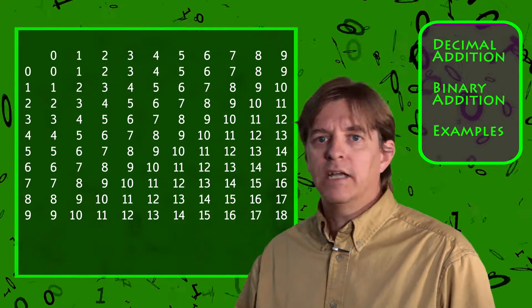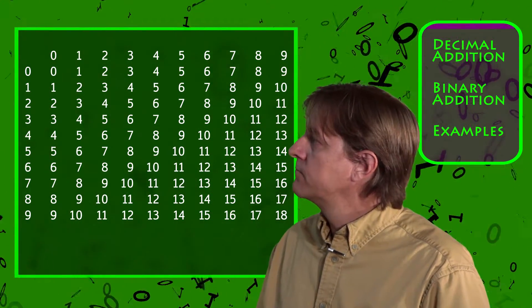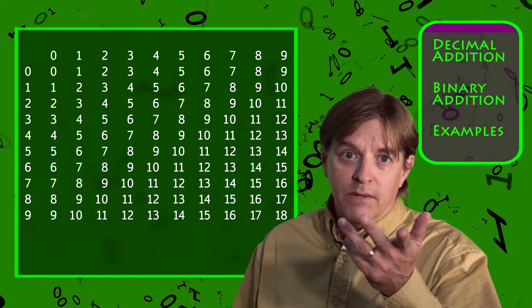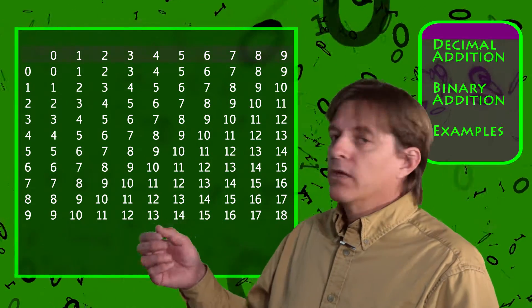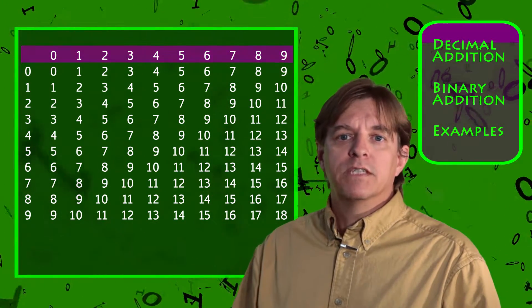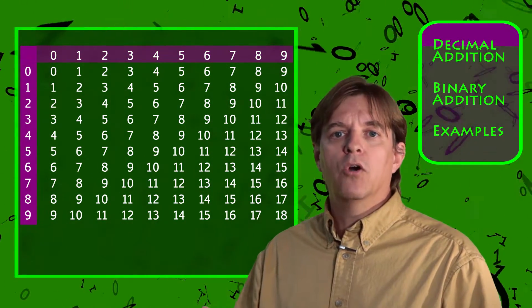Remember in grade school when you had to memorize this addition chart? Well, okay, maybe you didn't have to memorize it, but I sure did. This table is a matrix with the 10 numbers found in the decimal system, 0 through 9, on both the row and column headers.